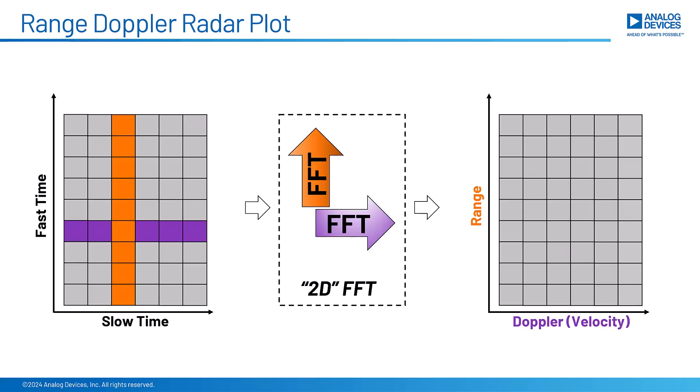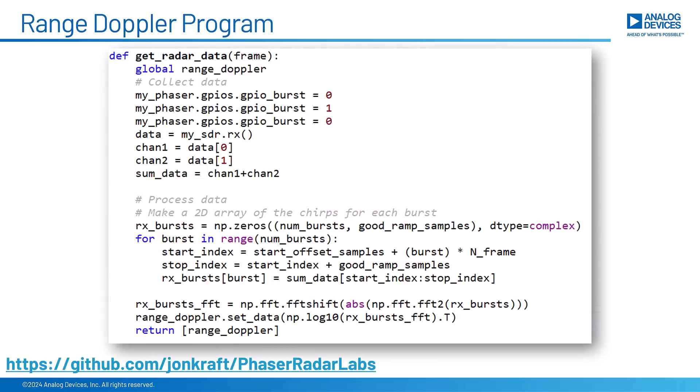So for our radar data, applying a two-dimensional FFT to our fast time, slow time matrix will return a new matrix with range on the y-axis and velocity or Doppler along the x-axis. And so the programming for this range Doppler plot is very easy. We just separate out the chirps into columns and then apply a 2D FFT.